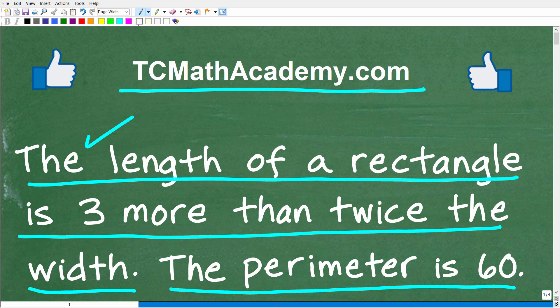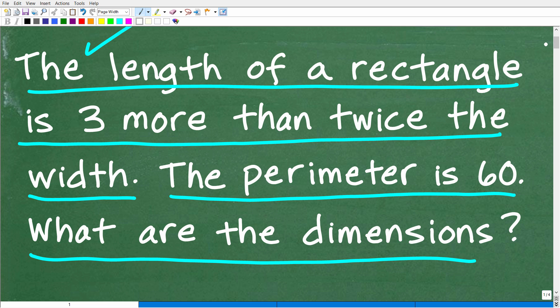If this video helps you out, or if you just enjoy this content, make sure to like and subscribe as that definitely helps me out. So again, the problem: the length of a rectangle is three more than twice the width. The perimeter is 60. What are the dimensions?